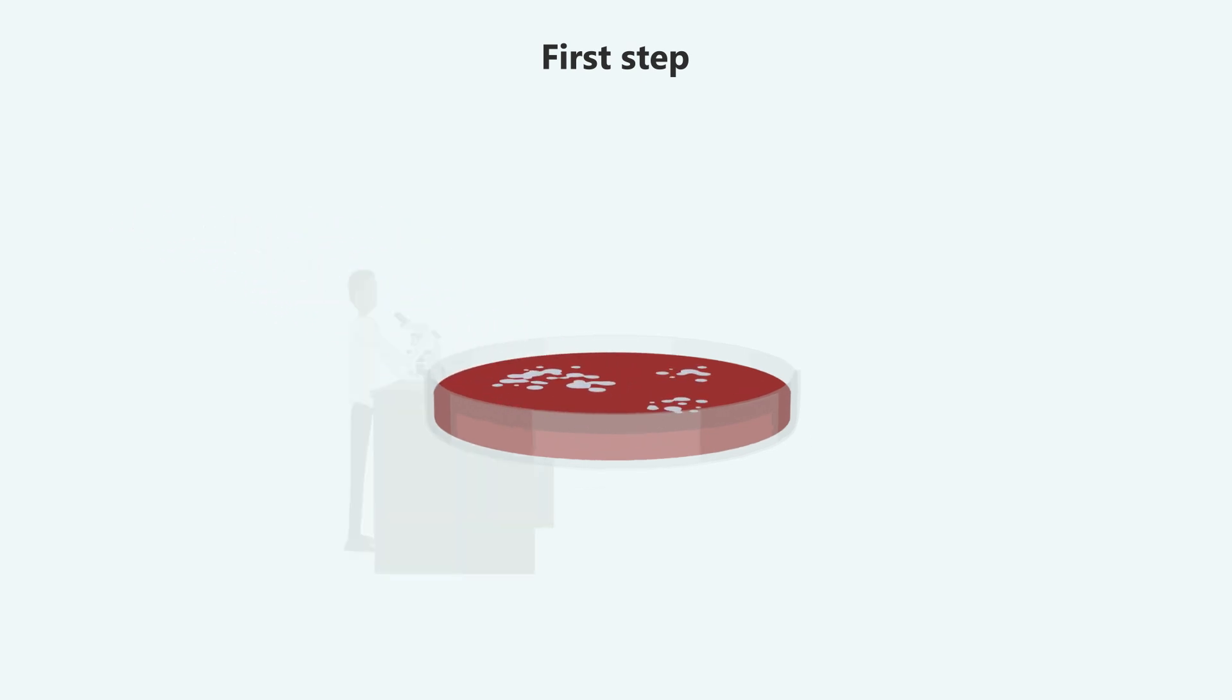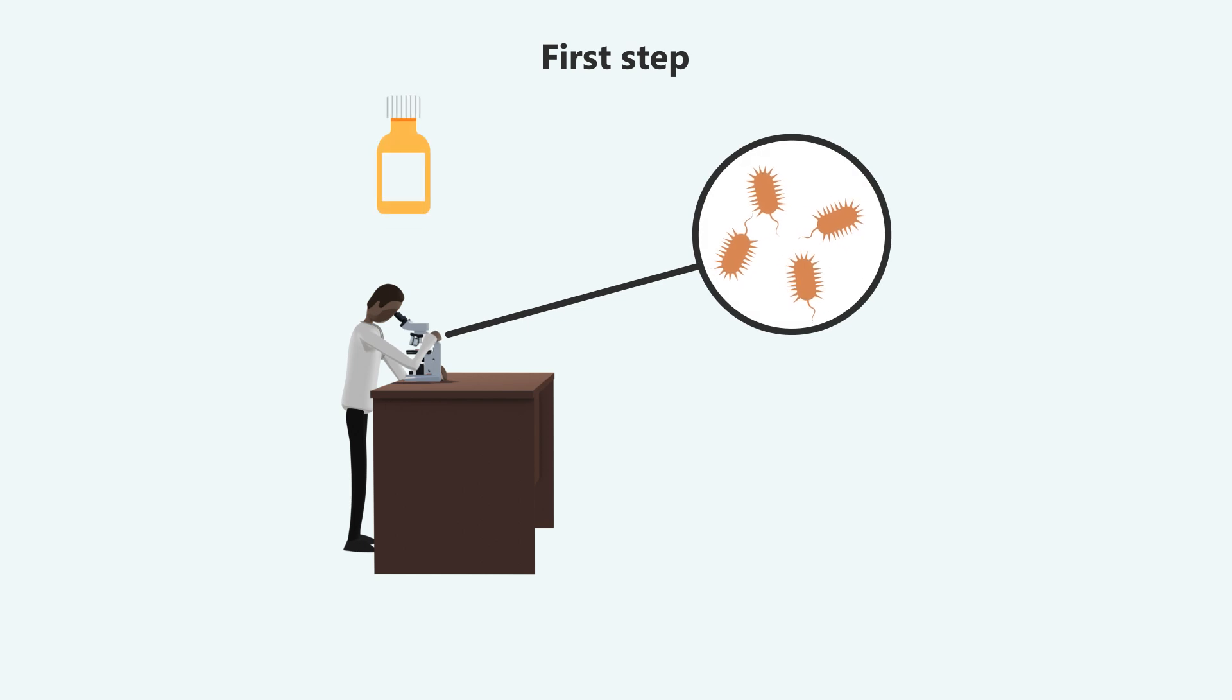Then, a veterinarian must determine the correct antibiotic and dosage needed to treat the specific bacterial disease. The dosage is strongly dependent on the biomass in the production unit.